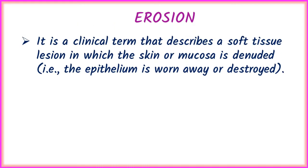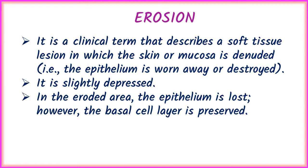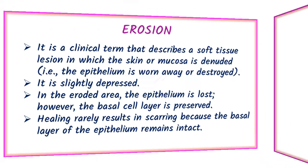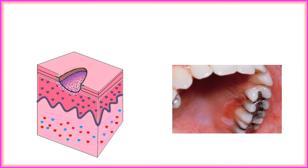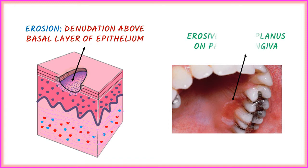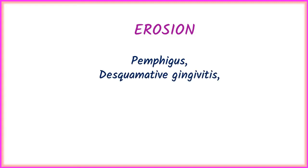Next is erosion. It is a clinical term describing a soft tissue lesion in which the skin or mucosa is denuded — that is, the epithelium is worn away or destroyed. It is slightly depressed. In the eroded area, the epithelium is lost; however, the basal cell layer is preserved, so scarring is very rarely seen. Oral conditions showing erosion include erosive lichen planus on palatal gingiva, pemphigus, desquamative gingivitis, and erythema multiforme.